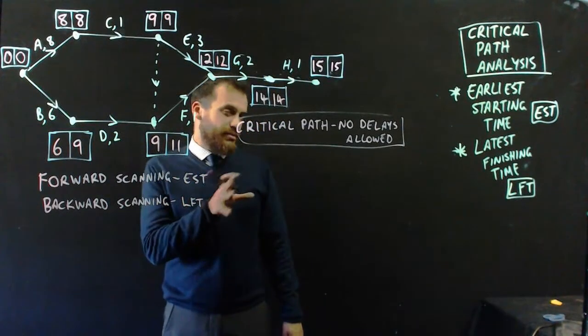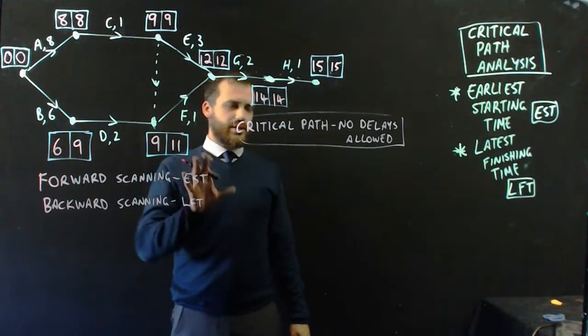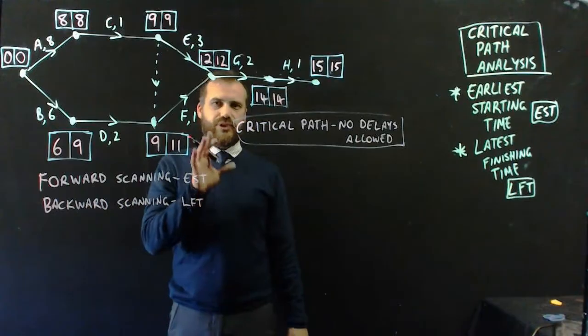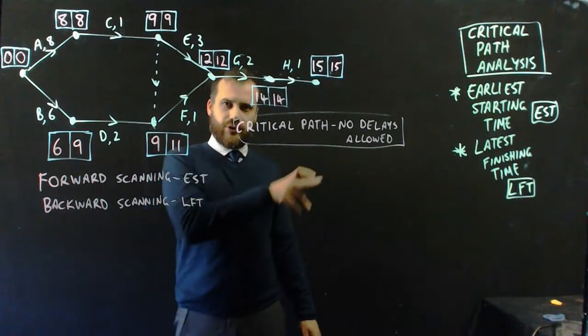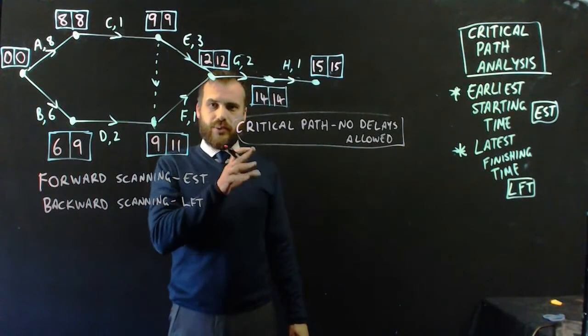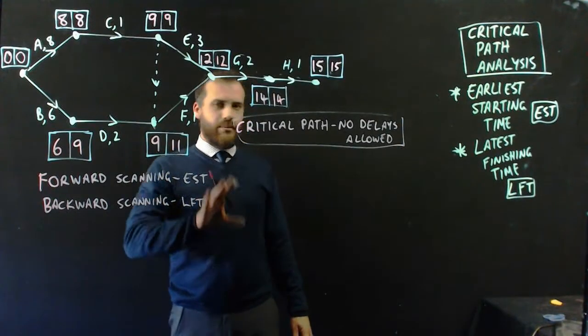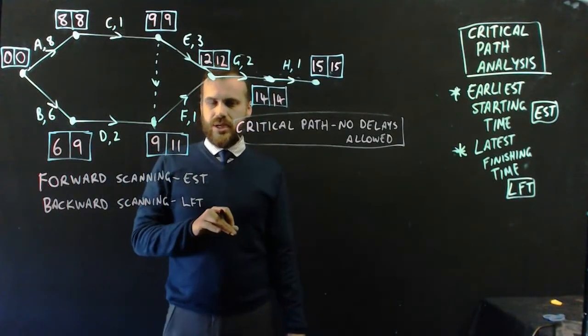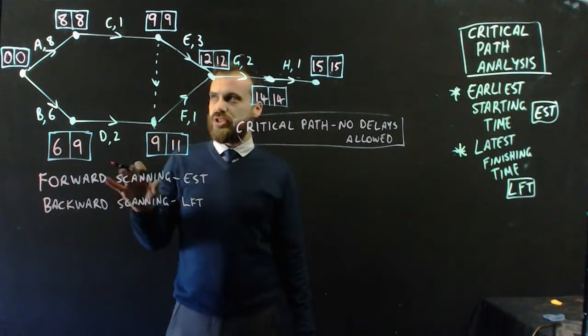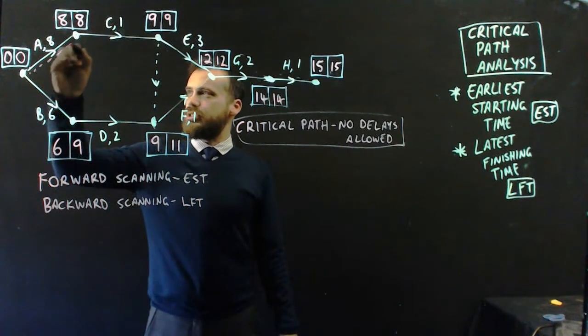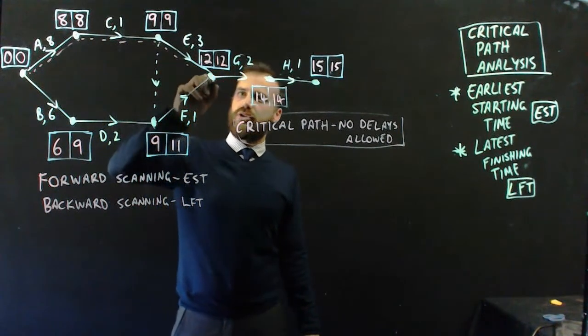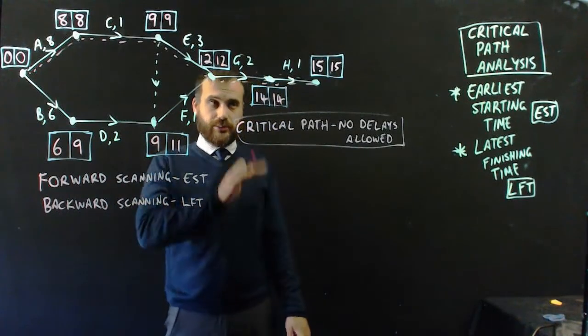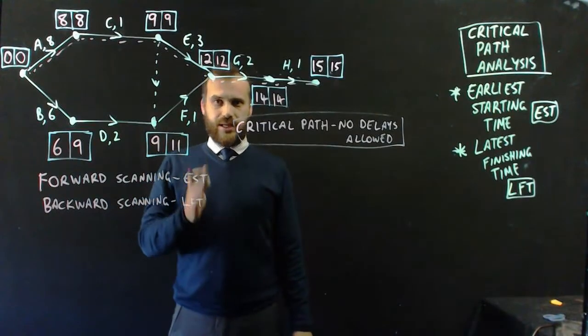So we're getting to the 10-minute mark now, and this is where I'm going to wrap it up. There is a nice, neat little table that I am going to draw up that sort of labels float times and things like that, but I'll save that for part two, where we can talk about that a little bit more. But I think we've done a pretty good job here. We did some forward scanning to find the earliest starting times. We did some backward scanning to find the latest finishing times, and most importantly, we found the critical path where everybody must work at maximum capacity, or the project will be delayed. That's it.